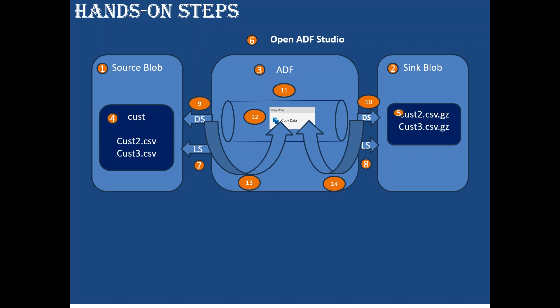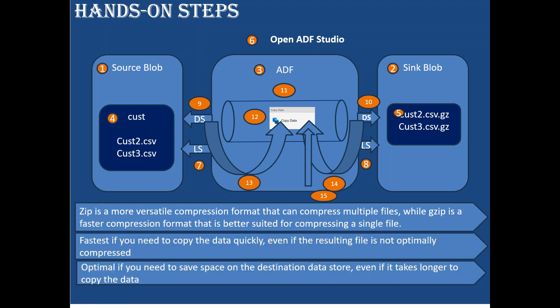The source side has individual CSV files. On the sink side, we're going to create the gzip files. At step 15, on the sink dataset side, we need to make configuration changes: the compression type - whether you want .gz or .gzip - and the compression level: fastest or optimal. Fastest saves time; optimal saves storage space. Once everything is set up, step 16 is to run the pipeline.